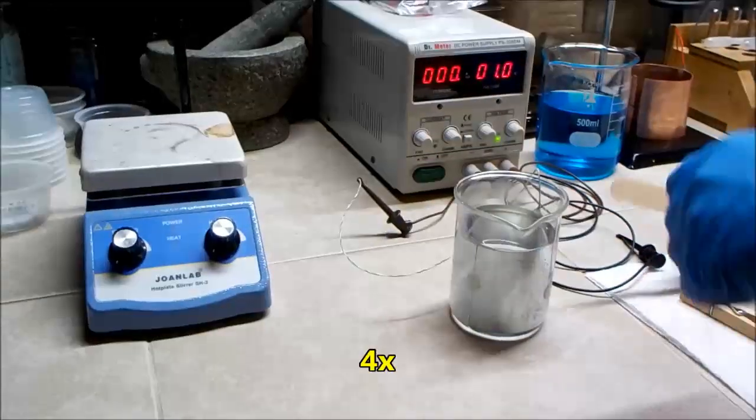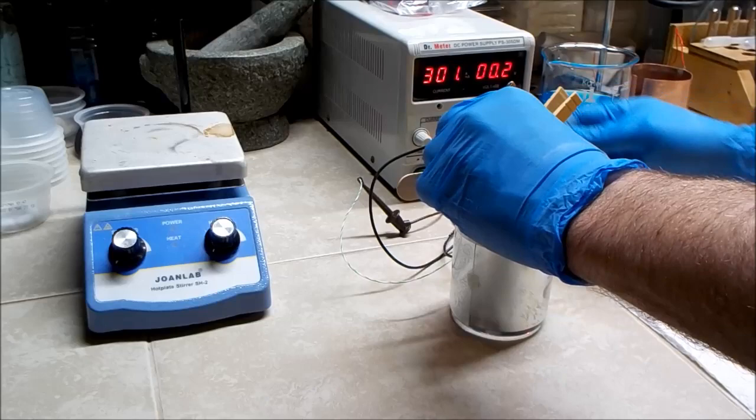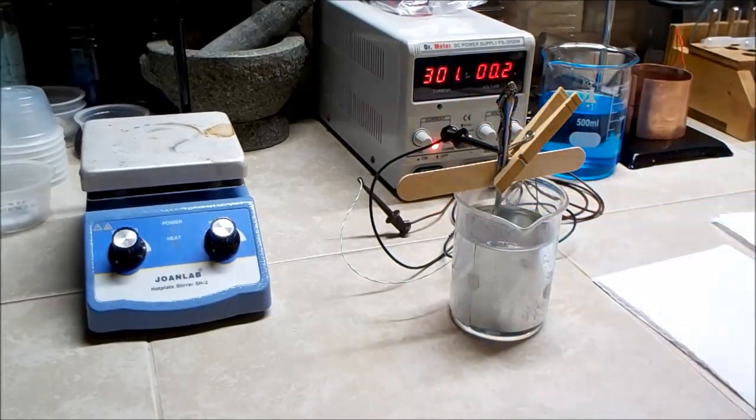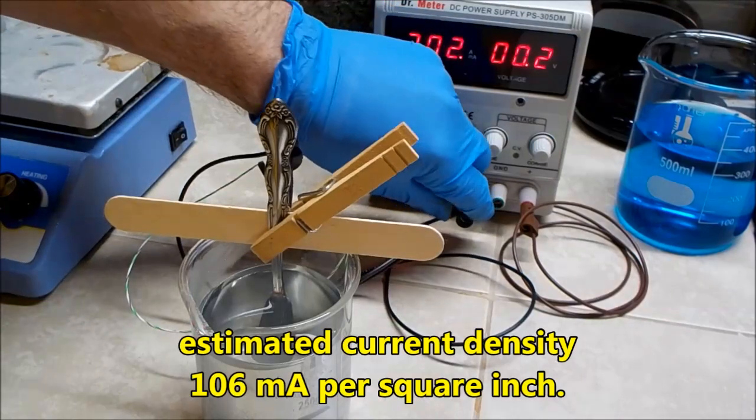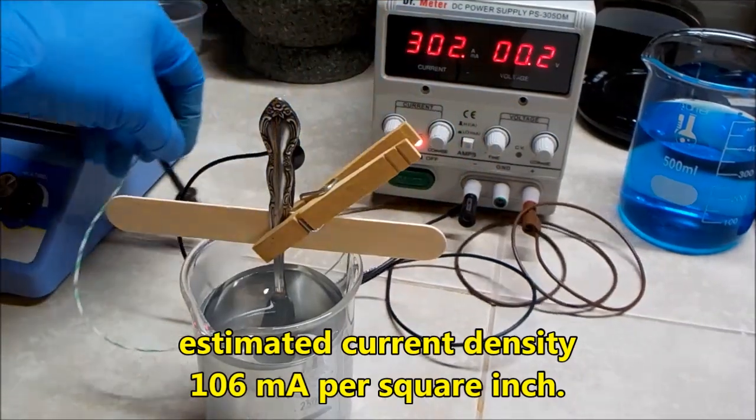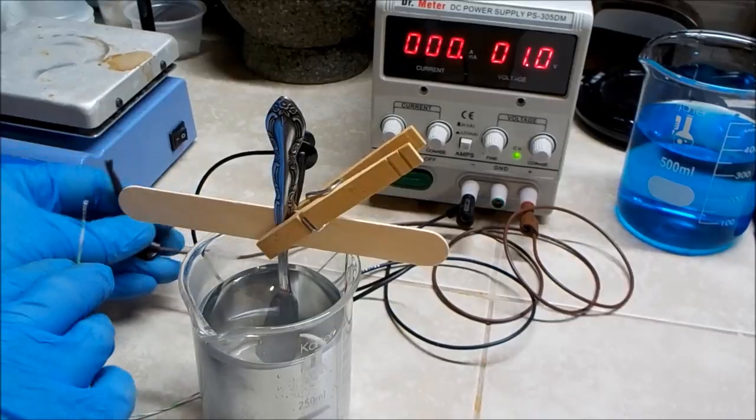I connect the zinc anode to the positive voltage lead and the negative lead will be attached to the knife. I leave the knife in the plating bath for 3 or 4 minutes, which I discover later is way too long. I should have stopped after only about 30 seconds. Too much zinc will spoil the next step.